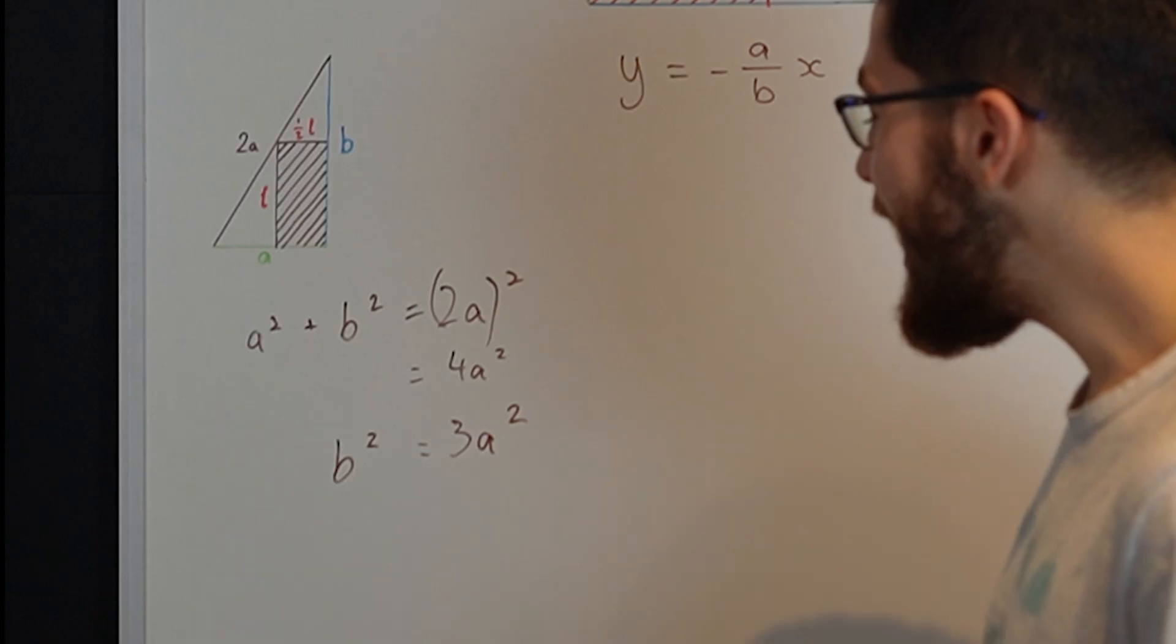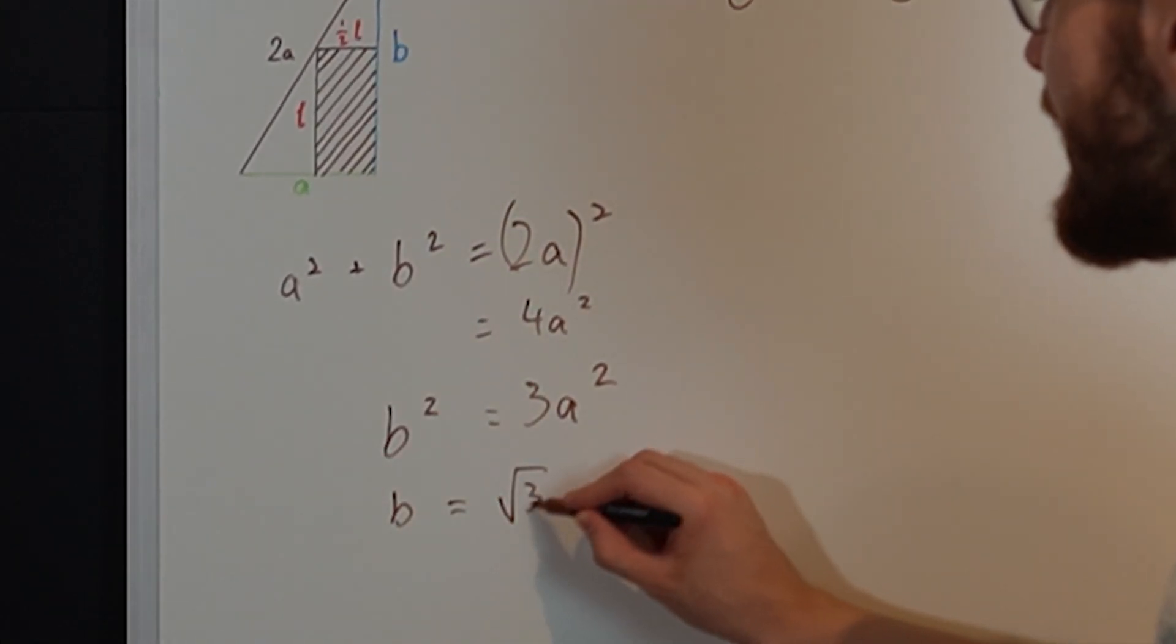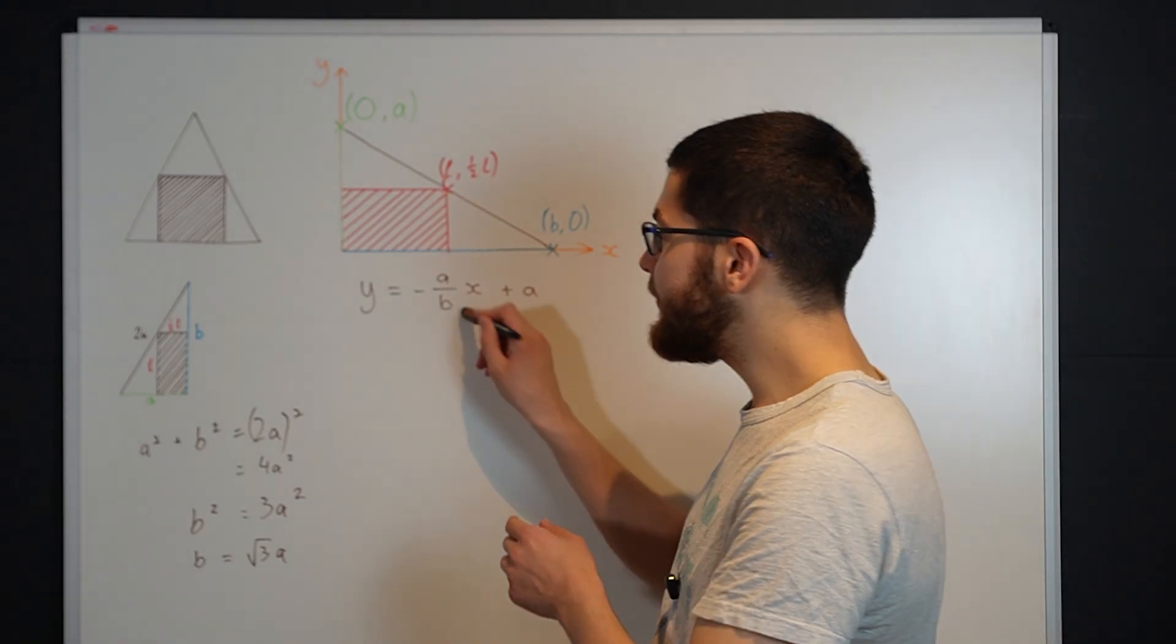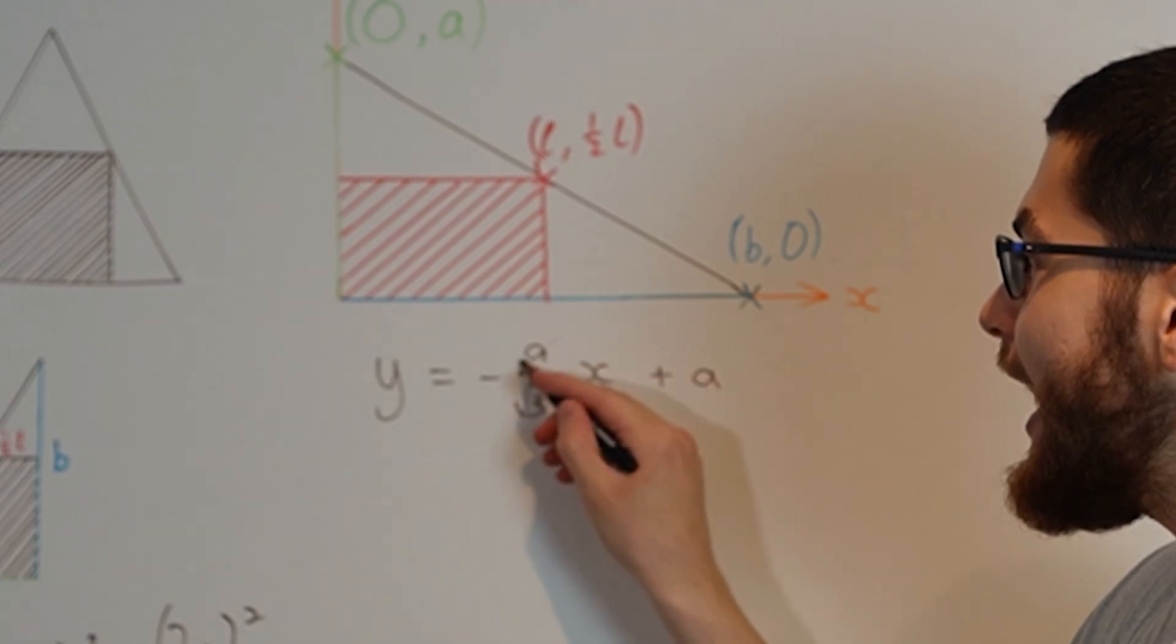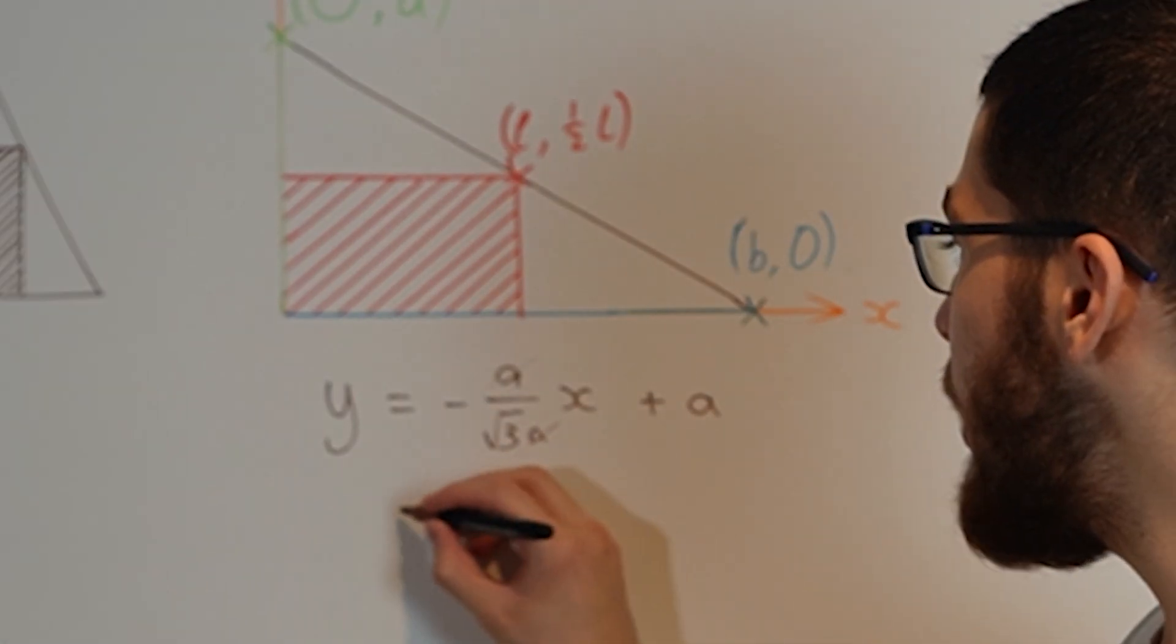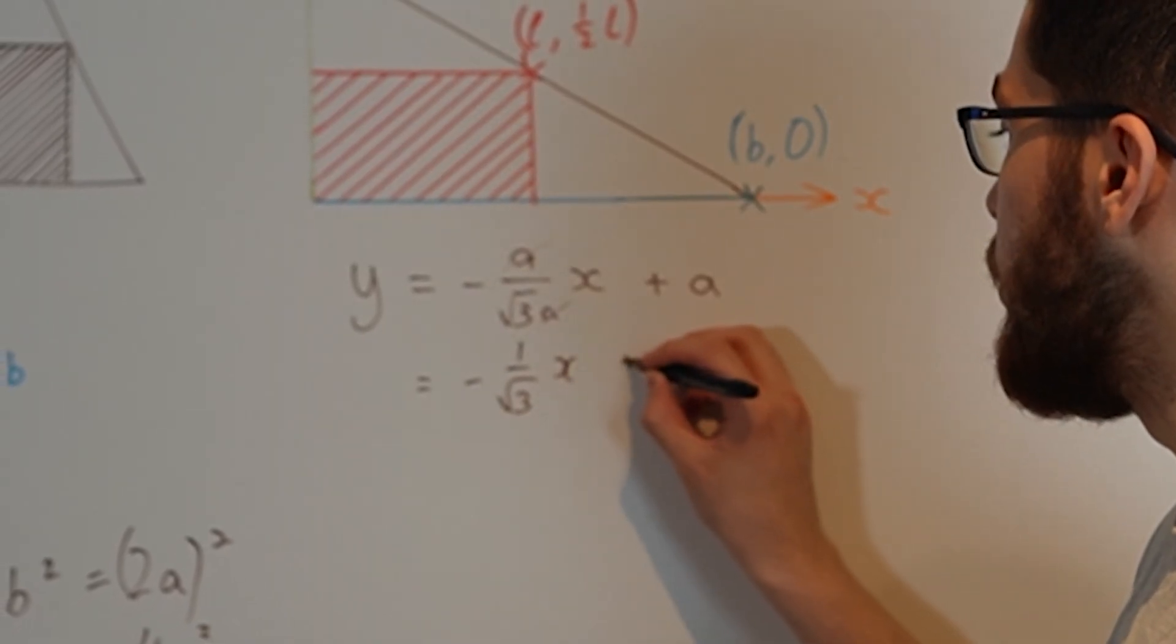is equal to 3A squared. And so we know that B must be equal to root 3A. So now we can replace this B with root 3A and notice what happens. The A cancels. So we get Y equals minus 1 over root 3X plus A.